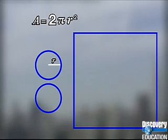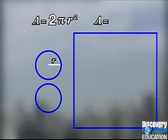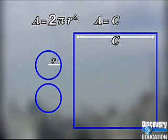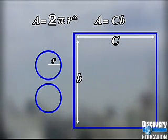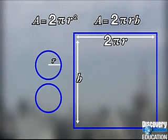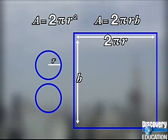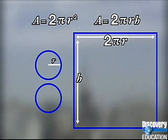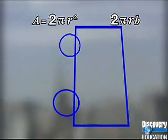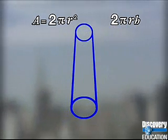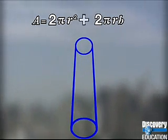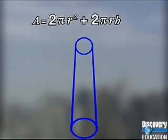For the area of the surface, take the circumference — the length of the rectangle — times the height of the cylinder. Two times pi times the radius is the formula for circumference. Then multiply that by the height. The entire formula for the surface area of a cylinder is two pi r squared plus two pi rh.